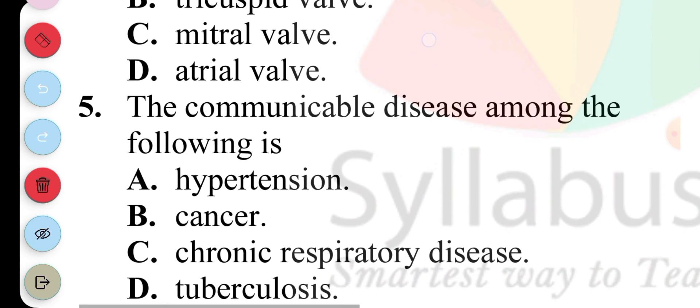Question 5: A communicable disease among the following is A. Hypertension, B. Cancer, C. Chronic respiratory disease, and D. Tuberculosis. And amongst these diseases, the one that is communicable is Tuberculosis, so D.